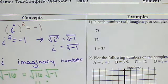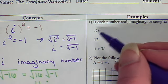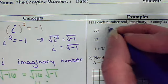So let's look at each of these three numbers and figure out, is it real, imaginary, or complex? Negative 7i. Well, that's imaginary. It's got an i.